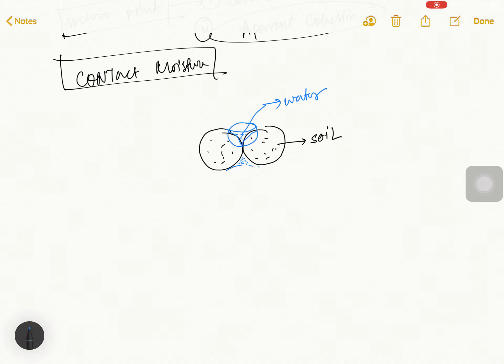So in layman language, capillary water, if it's capillary water, then this particular water known as contact capillary water. If there is two soil particles, which is available void space, if there is water, that is contact capillary water. So first point sorted out.